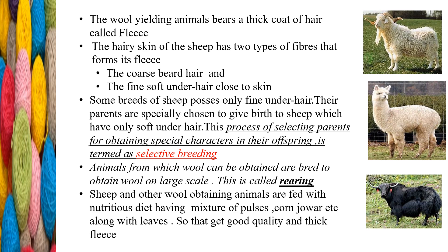The fine soft under hair is considered to be of fine quality. The coarse beard hair has a single strand that is slightly thick compared to the soft under hair. Being slightly thicker, its texture is somewhat rough. Hence the second type — the fine soft under hair — is more preferred over the coarse beard hair. Certain breeds of sheep possess only fine under hair.